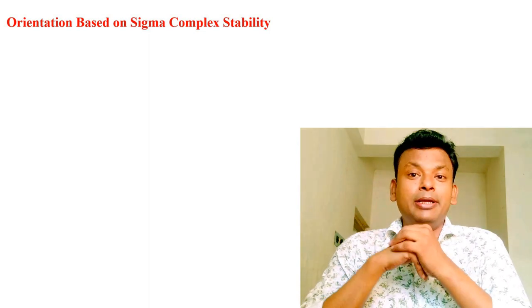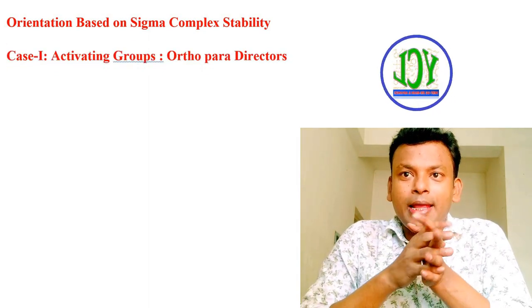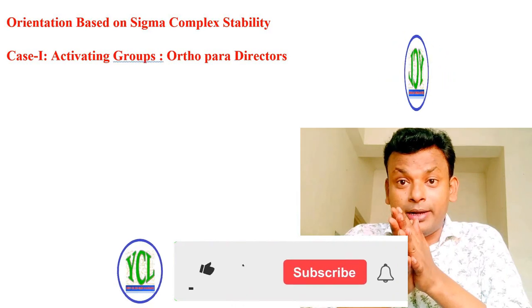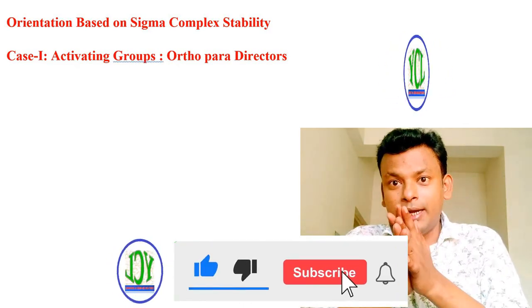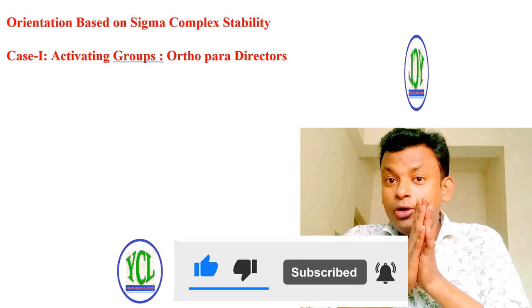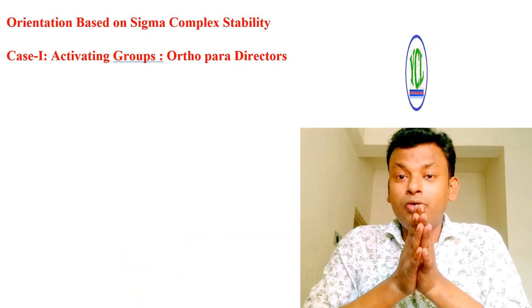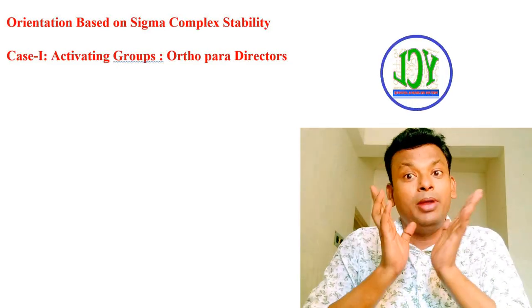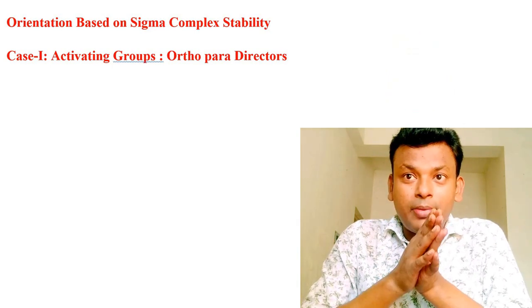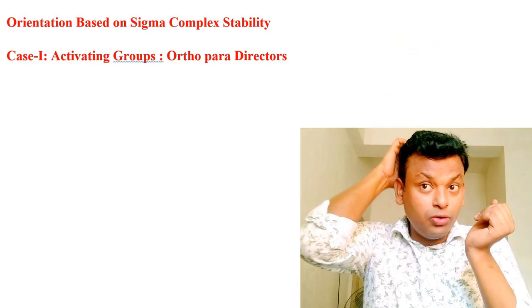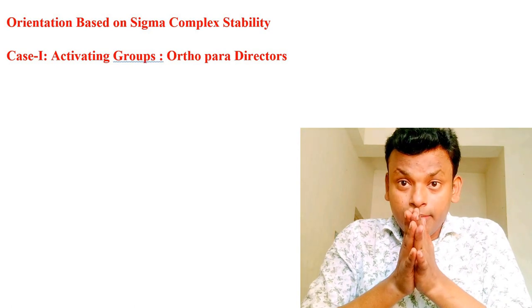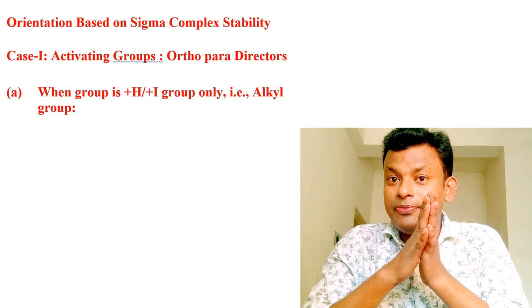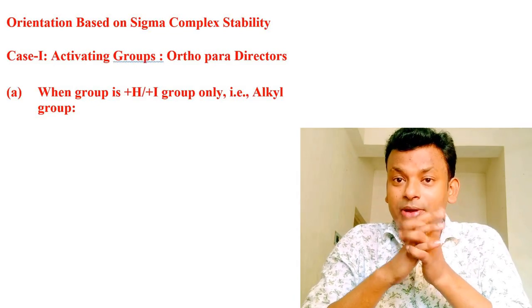Sigma complex stability determines orientation. Case 1: activating groups are ortho-para directing. Deactivating groups are meta-directing, except for halogen groups (Cl, F, Br, I), which are ortho-para directing. All other deactivating groups are meta-directing. Case 1A: when the group has +H (hyperconjugation) and +I (inductive) effect — such as alkyl group CH₃ — which has both +I and hyperconjugative effects.